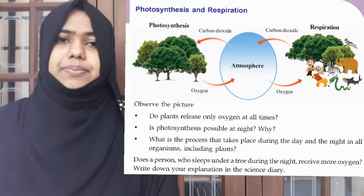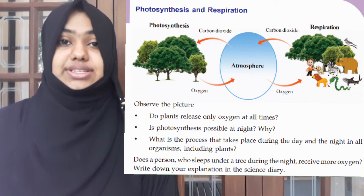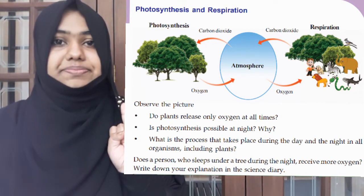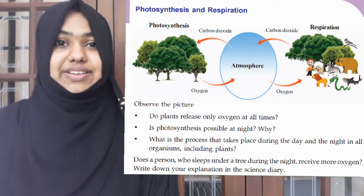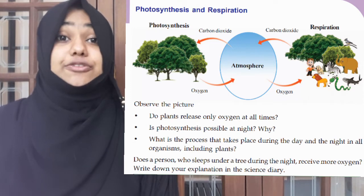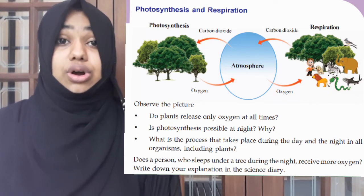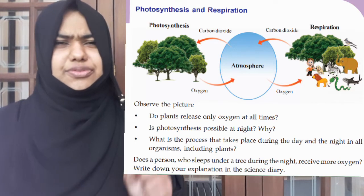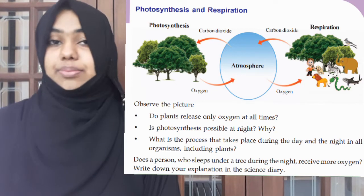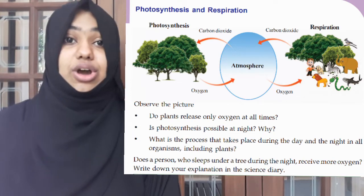Is photosynthesis possible at night? What are the requirements of photosynthesis? Carbon dioxide, water, and one major factor — sunlight, which chlorophyll captures. At night, is sunlight available? No. So photosynthesis only happens during daytime. At night, plants respire; photosynthesis does not go on. So plants do not release oxygen during the night. There are a few very rare plants that give out a little oxygen at night, but most trees do not — they only give out carbon dioxide.